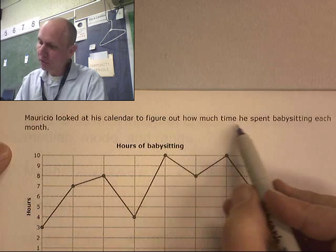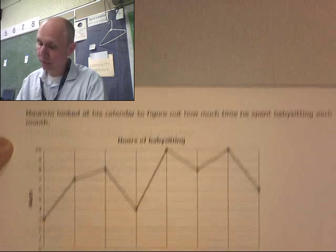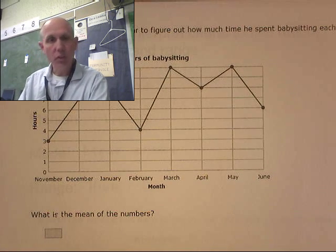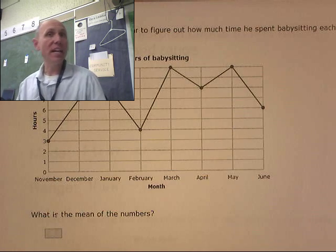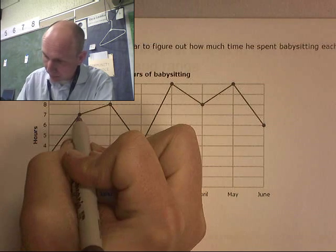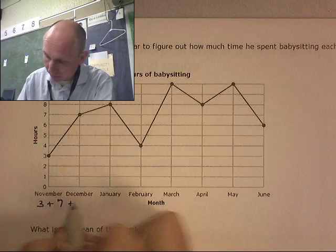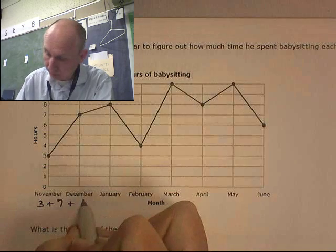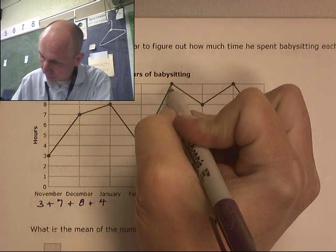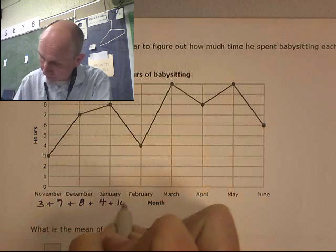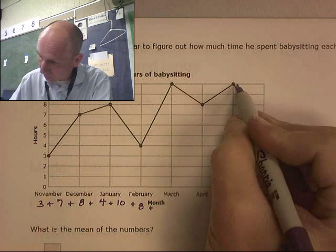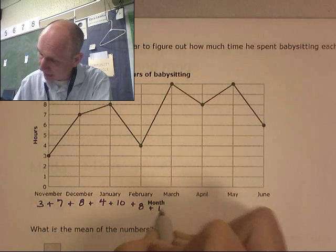Mauricio looked at his calendar to figure out how much time he spent babysitting each month. We want to find his mean, or his average. To do that, we're going to add up all the values and divide by the number of values. So what we have here is three plus seven plus eight plus four plus ten plus eight plus ten plus six.